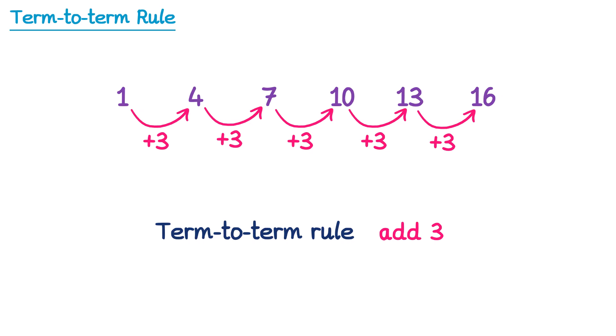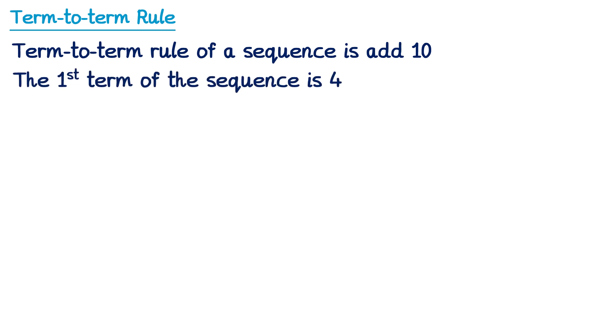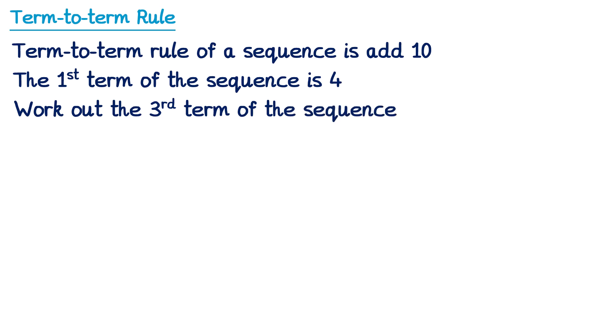Let's have a look at how we can use this in questions. So for this question, we're told the term-to-term rule of a sequence is add 10. The first term of the sequence is 4, and we need to work out the third term of the sequence. So we're told the first term is 4, so we can write down 4 as the start of this sequence.